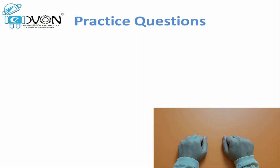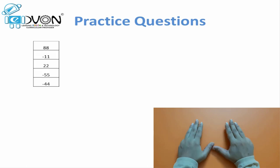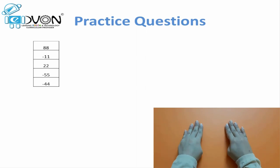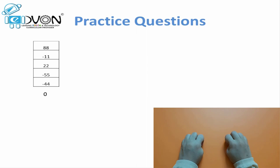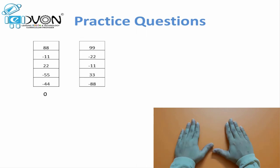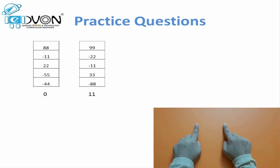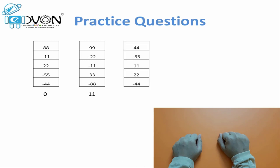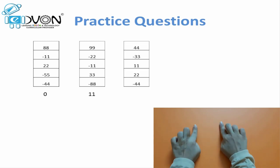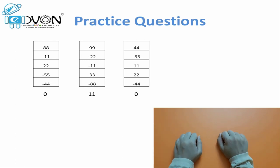We will practice a few more questions to build speed. Now we will increase our speed gradually. 88 minus 11 plus 22 minus 55 minus 44 — the answer is 0. Next question: 99 minus 22 minus 11 plus 33 minus 88 — the answer is 11. Make zero and next question: 44 minus 33 plus 11 plus 22 minus 44 — the answer is 0.